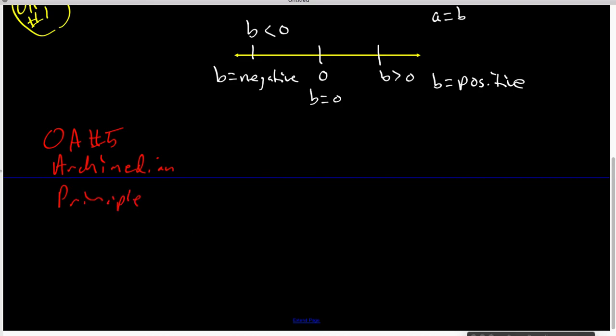So if I have a number line and I have A is somewhere here, then what the Archimedean principle says is that there exists an integer N such that A is trapped between N and N plus one.